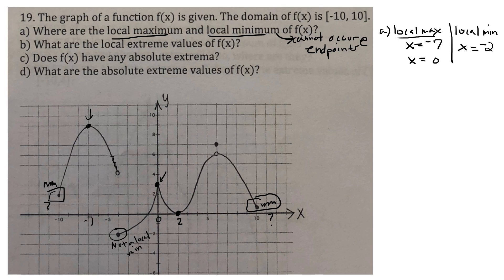Next up, question B. What are the local extreme values of the function? So when you see the word values, that means the y value. And so we have the x values, but we want to know the actual y where they occur at. So here's letter B. X equals negative 7, Y will be equal to 9. X equals 0, Y will be equal to 3.